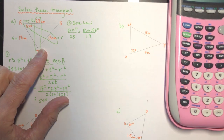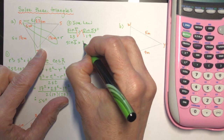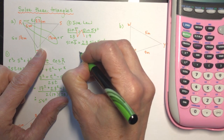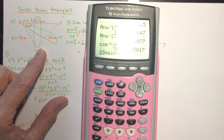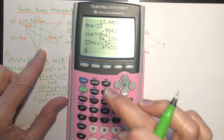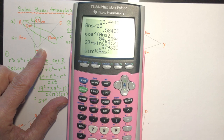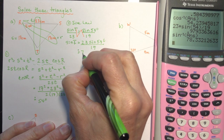Computing: 23 times sine of 54 divided by 19 gives approximately 0.979. Taking inverse sine gives approximately 78 degrees for angle T.